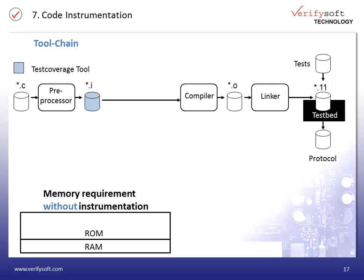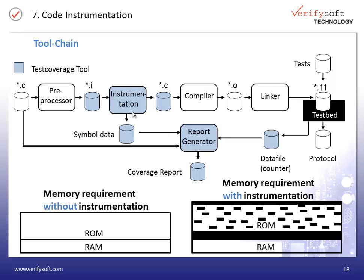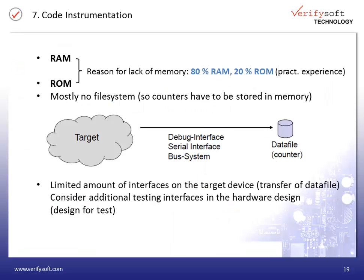We see here the process of unit testing without test coverage, and we will now add TestWell CTC++ to this process. The instrumentation is done between the preprocessor and the compiler, and we get the coverage report at the end of the process. The challenge is that the instrumentation needs additional memory — additional RAM and ROM are needed. However, compared to other test coverage tools, the need for supplementary memory in TestWell CTC++ is very, very low.